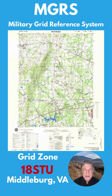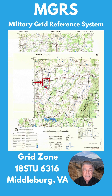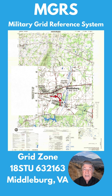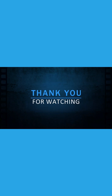The third part is the numerical location, always read right and up. This map scale is 1 in 50,000, so each grid square on the map is 1 kilometer. A four-digit grid of right 63 and up 16 puts us within 1 kilometer of Middleburg. A six-digit grid of 632 right and 163 up puts us within the cemetery grounds near the city. And an eight-digit combination of 6321 and 1631 gets us within 10 meters of the building.